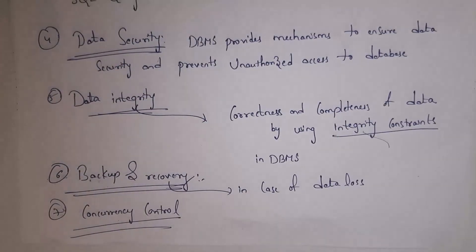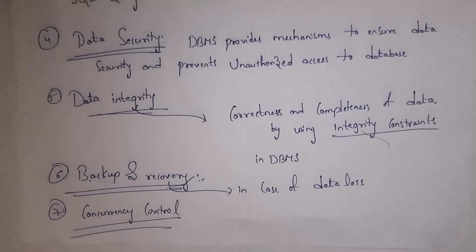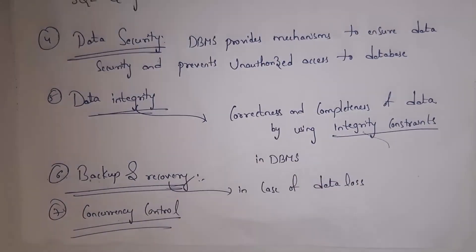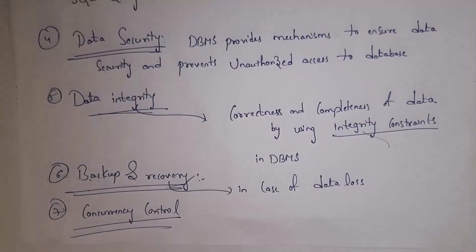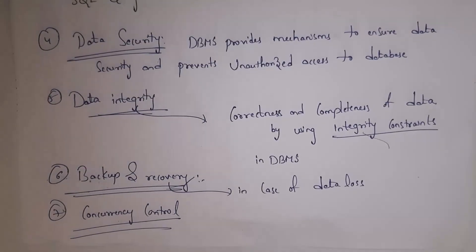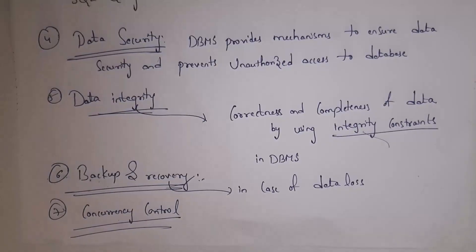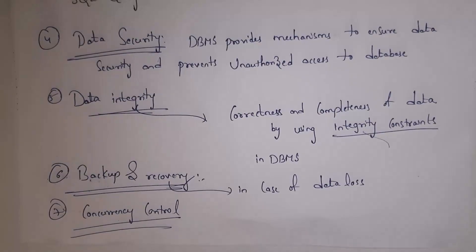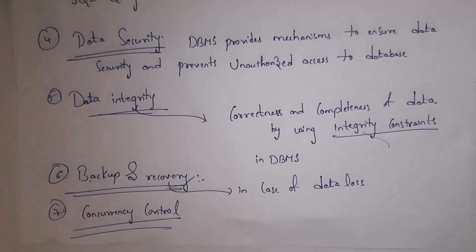The next task is data integrity. In DBMS software we can use integrity constraints — rules applied while creating tables — so that data will be correct and complete. Data integrity means correctness and completeness. The next task is backup and recovery: backup means storing data in multiple locations; recovery means restoring data in case of data loss. The last task is concurrency control — multiple users can access DBMS at the same time from different locations without any problem.